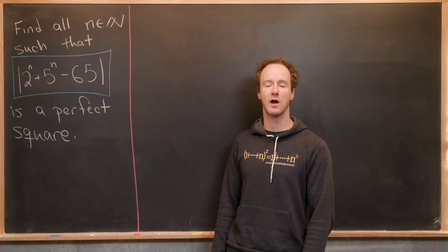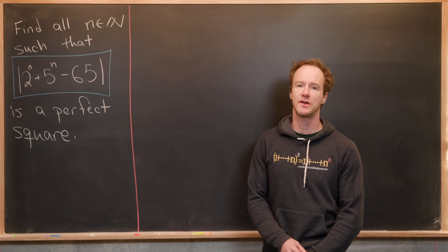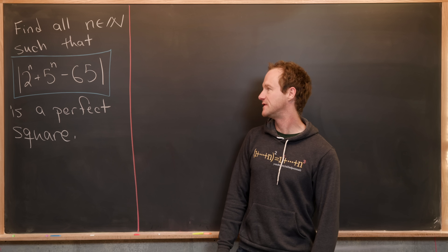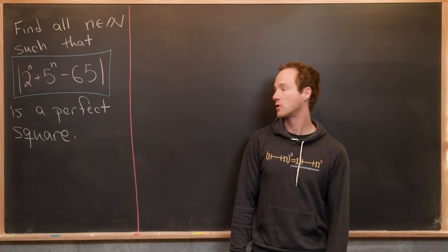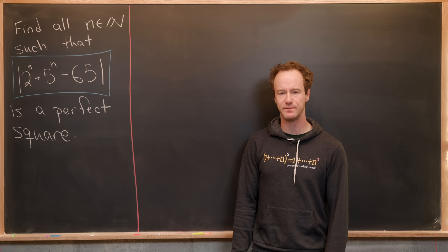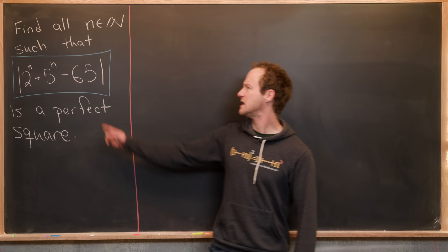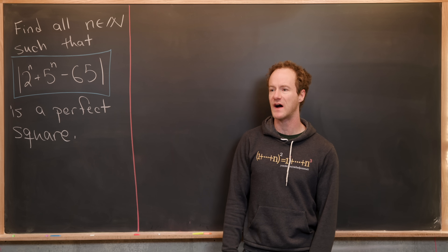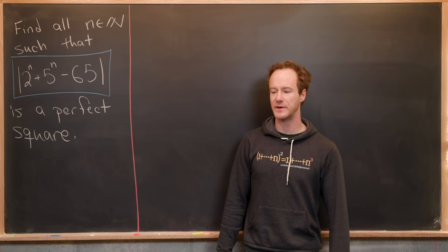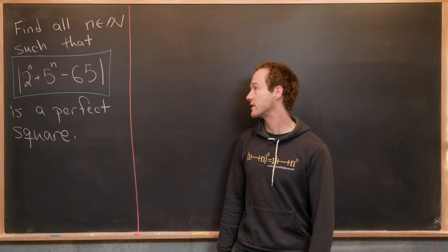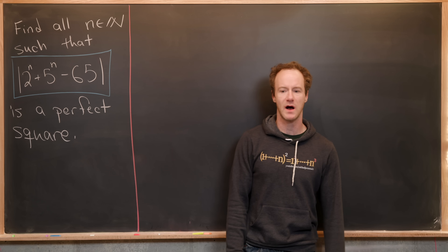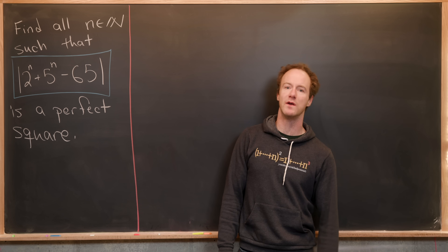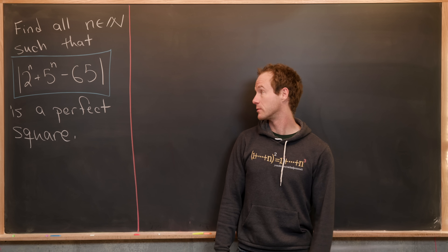We're going to look at a pretty interesting viewer-suggested problem. Our goal is to find all natural numbers n such that the absolute value of 2 to the n plus 5 to the n minus 65 is a perfect square. Some hints are built into this: 65 and 5 are both multiples of 5, so you might want to look at this mod 5. Also, 2 is a primitive root mod 5, which is another hint to work mod 5. And 65 is one more than a power of 4, which is probably helpful as well.